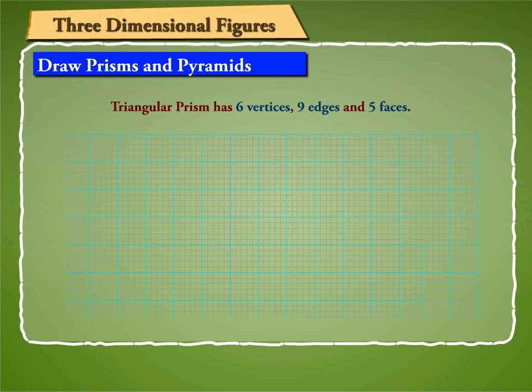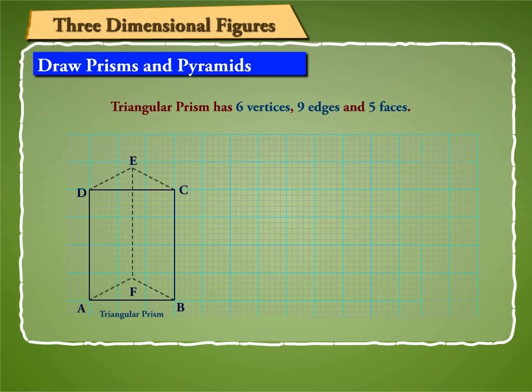Let us draw a triangular prism. We have learnt that a triangular prism has 6 vertices, 9 edges and 5 faces, 2 triangular and 3 rectangular. In the on-screen figure, a triangular prism is drawn on graph paper.